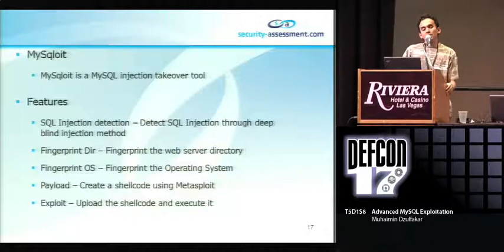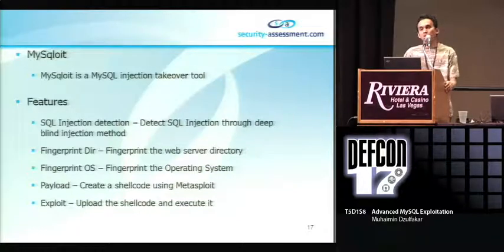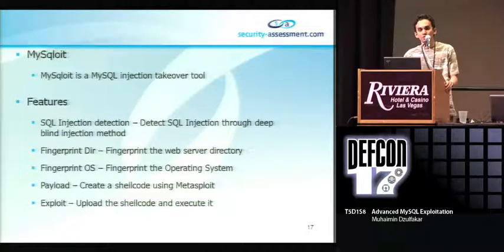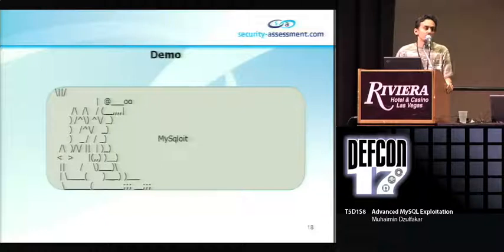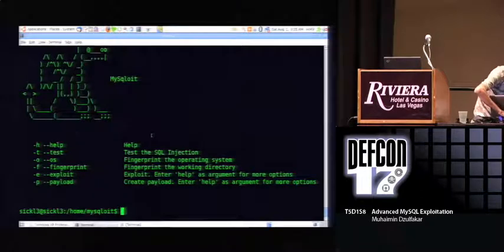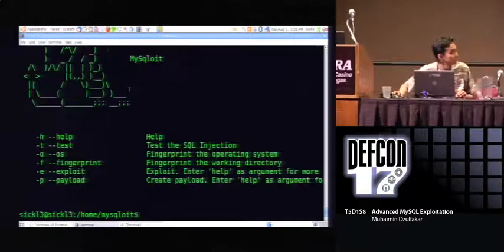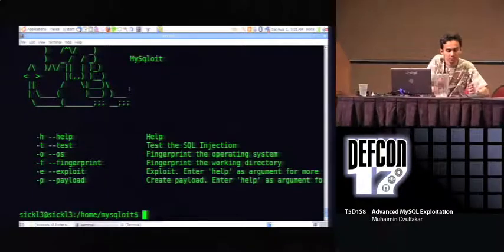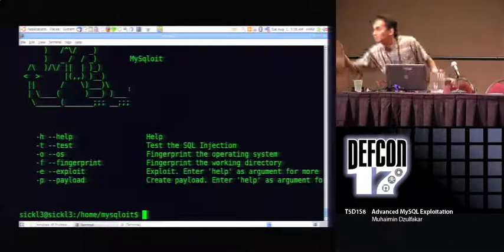MySQLOist is a SQL injection takeover tool that I wrote as a proof of concept to demonstrate how we can perform remote code execution on a WAMP environment. It contains several modules: a SQL injection detection module, a fingerprint directory module, a fingerprint operating system module, a payloads module, and an exploit module. I'm going to demonstrate how we can use all these modules to upload and execute Metasploit shellcode.